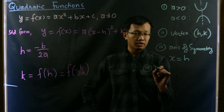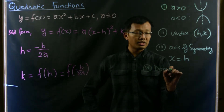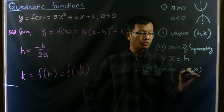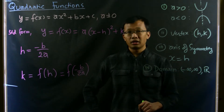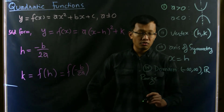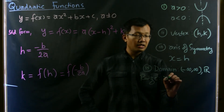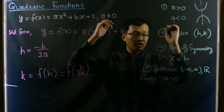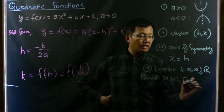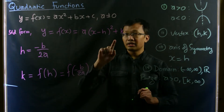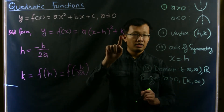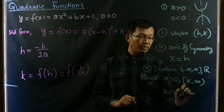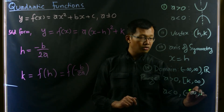The domain is always the same — it's negative infinity to infinity, or the whole real numbers. The range, if a is greater than zero and the curve opens upward, is k to infinity. If a is less than zero, the range is negative infinity up to k.